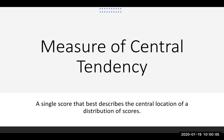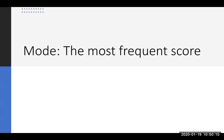We're going to talk about three different types of measures of central tendency, and the first one we'll talk about is the mode. The mode is pretty easy — it is the most frequent score. That means if you have a collection of scores, you just pick out the one that happens the most.